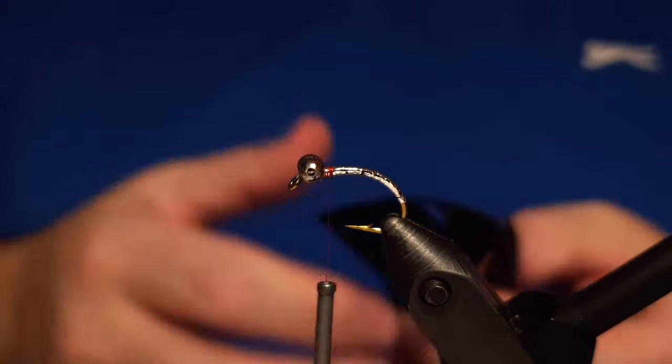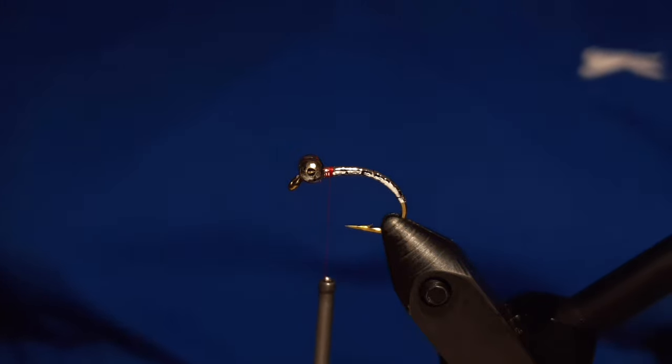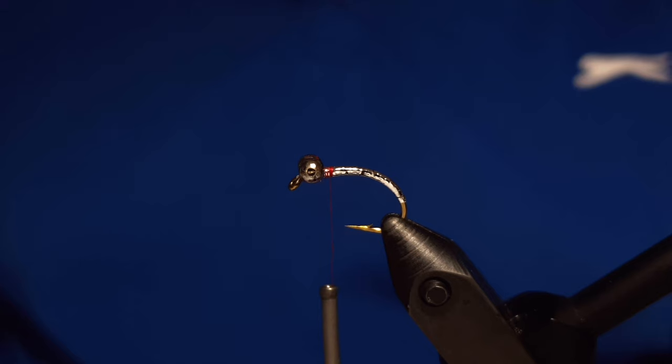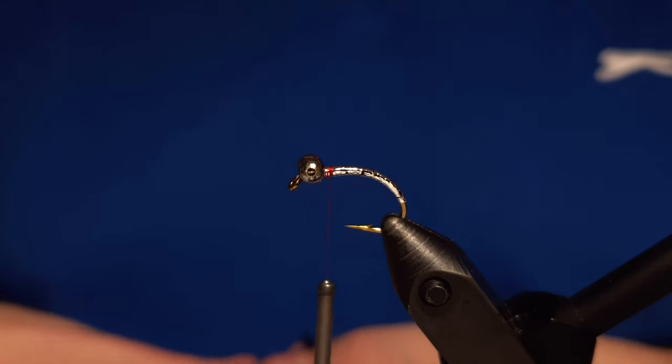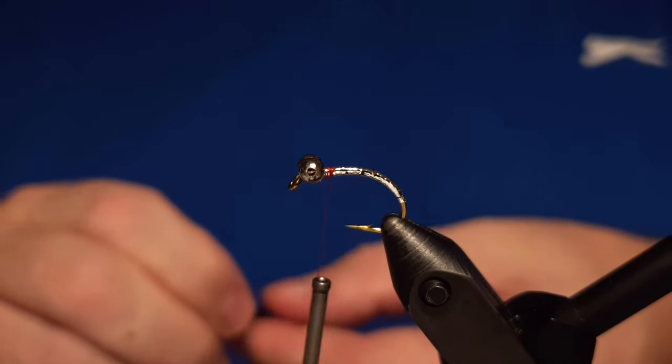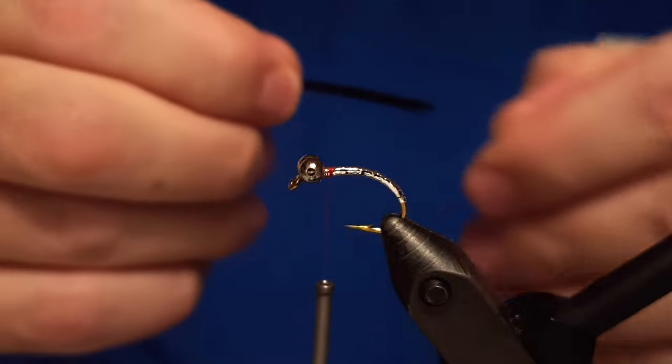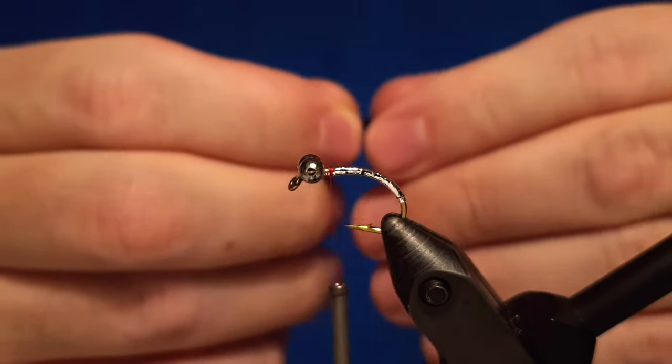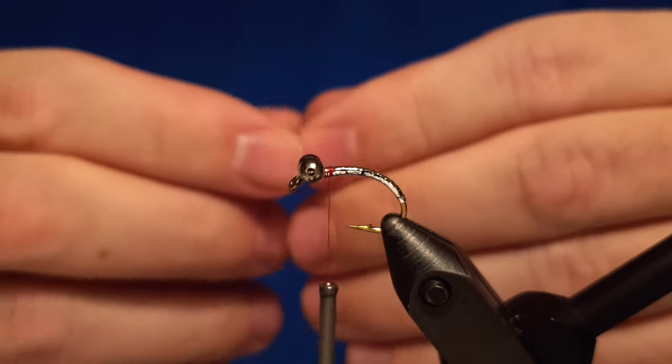The next step is the wing. We are using a black feather for the wing, either duck or geese. Any black feather with long enough fibers will do the job, but I'm using geese since I've run out of black duck feathers.